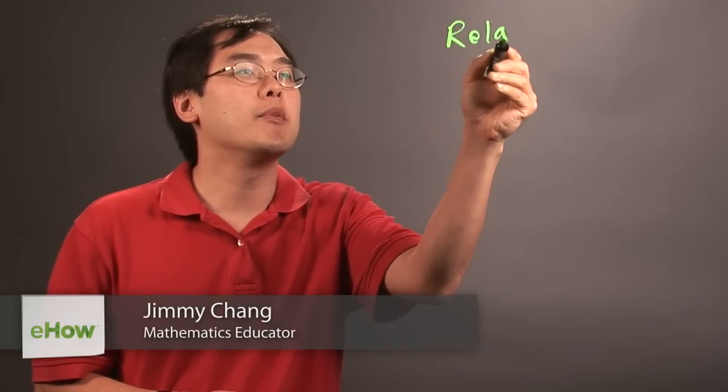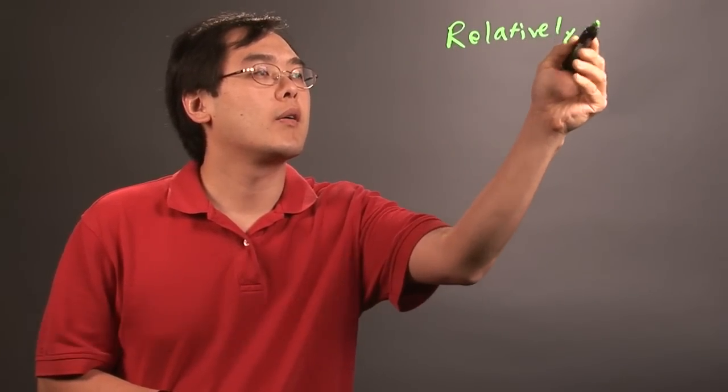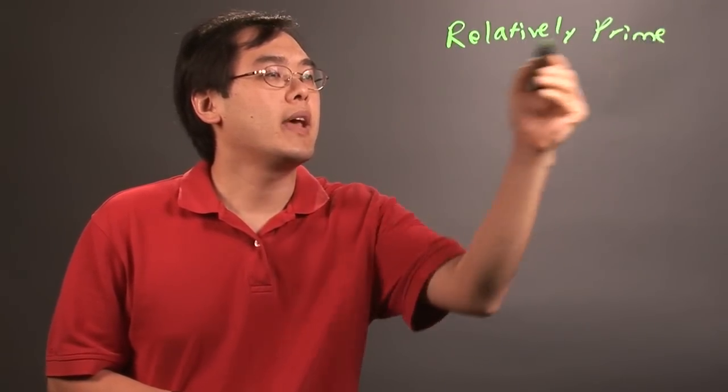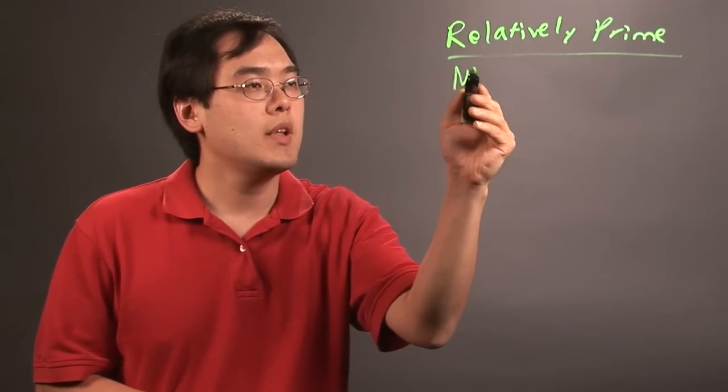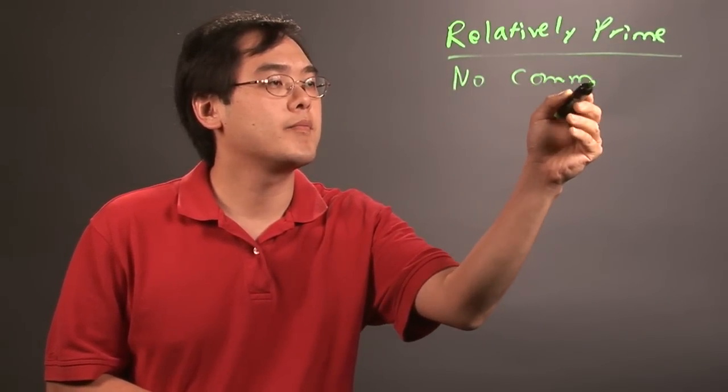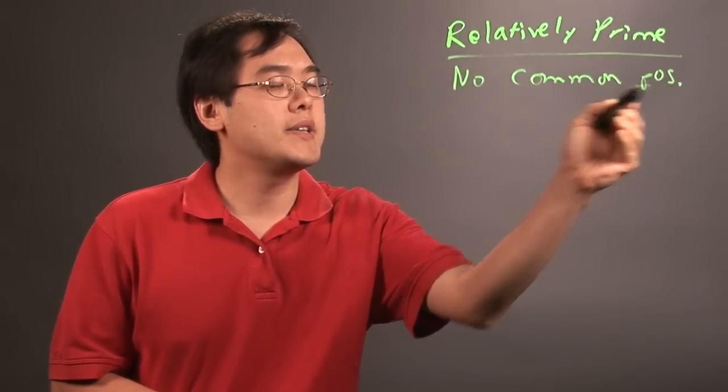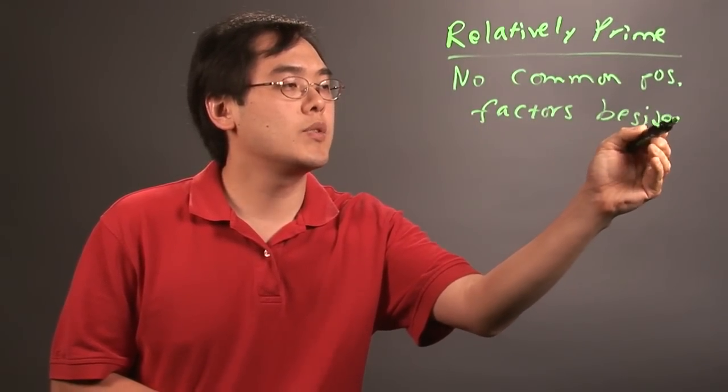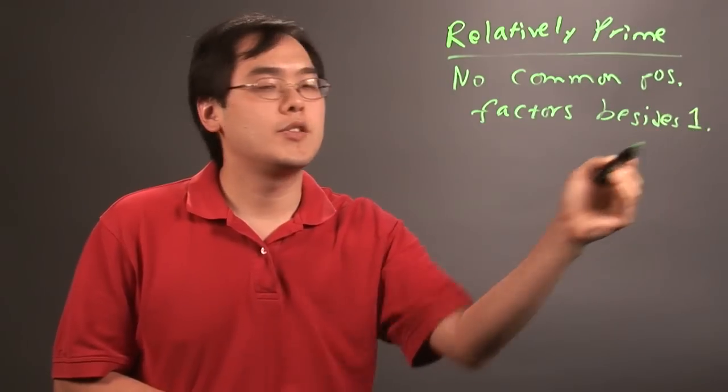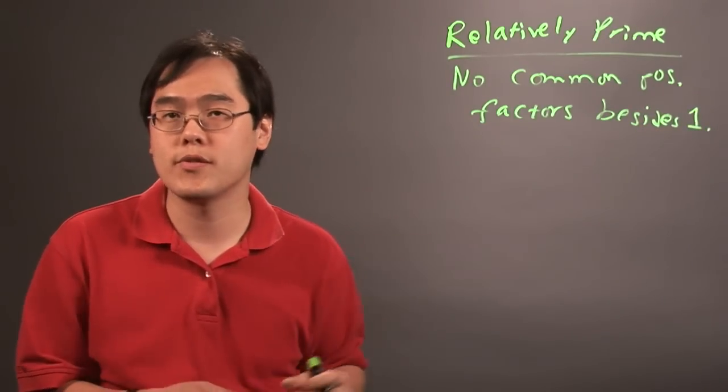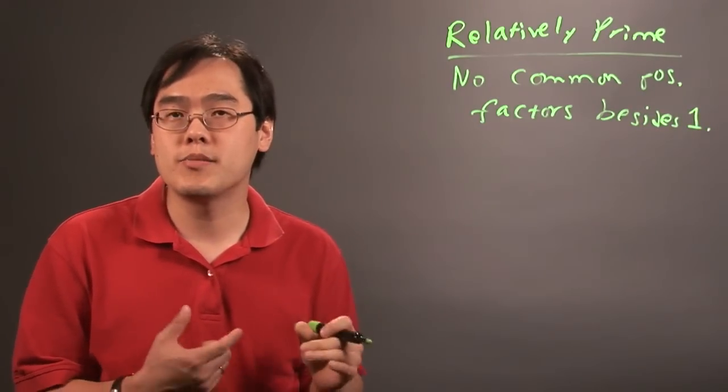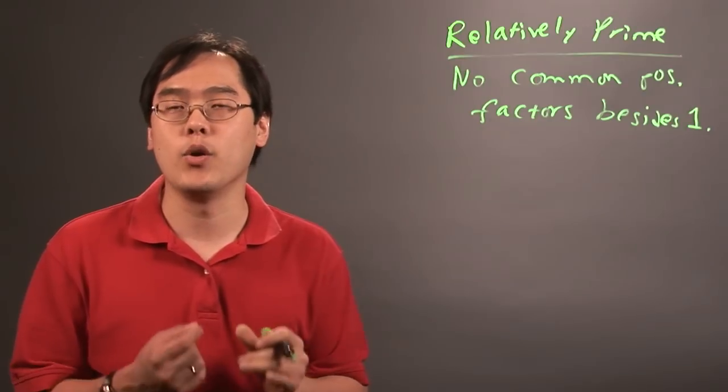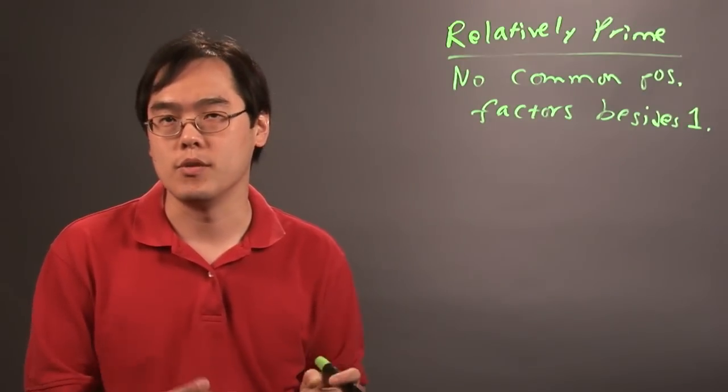Now, two numbers are relatively prime if they have no common positive factors besides one. So in other words, the two numbers or three numbers, if you want to consider that as well, the numbers themselves may not have to be prime, but the only factors they have in common would just be 1.